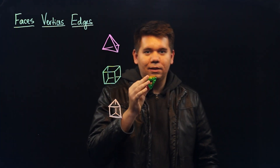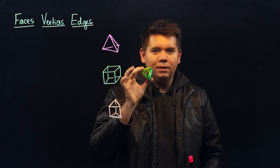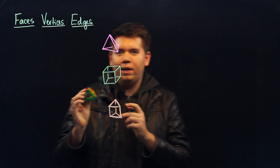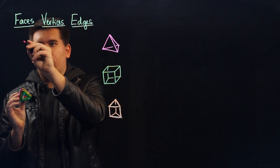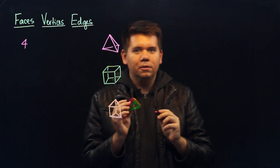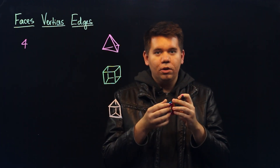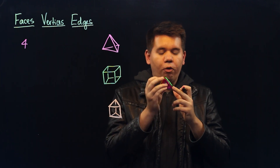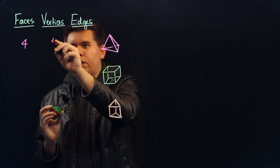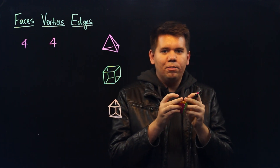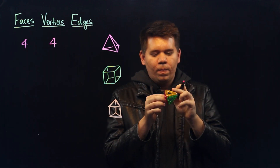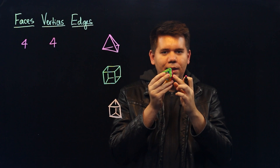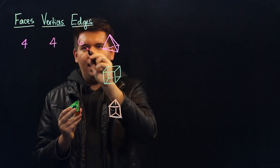If we count, for instance, in the tetrahedron, the number of faces, we see that there are 1, 2, 3, 4 triangular faces, for a total of 4 faces. If we count the number of vertices, or corners, we see there are 1, 2, 3, 4 vertices, or 4 corners. And if we count the number of edges: 1, 2, 3, 4, 5, 6 — there's a total of 6 edges.